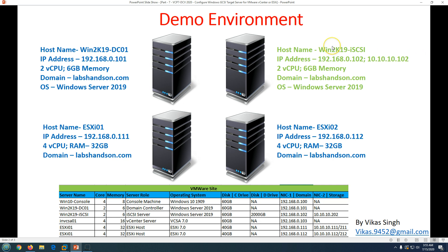This is my iSCSI server where I'm going to install the iSCSI target server role. You can see this machine has two NICs — one NIC is 192.168.0.101, which is for domain and management connectivity. The second NIC at 10.10.10.102 is the storage network connection. In this whole series, whenever you see 10.10.10.x addresses, that is the storage network. The ESXi hosts will have two NICs to access the iSCSI target server, and storage traffic will come on this port at 10.10.10.102.